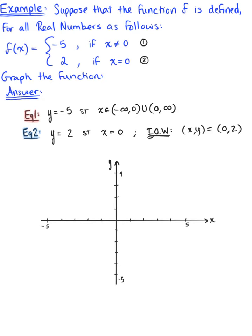Let's start by plotting equation 2. We have the point (0, 2). There it is on our graph, the ordered pair (0, 2), or equation 2 from our piecewise function. So equation 2 is all set.